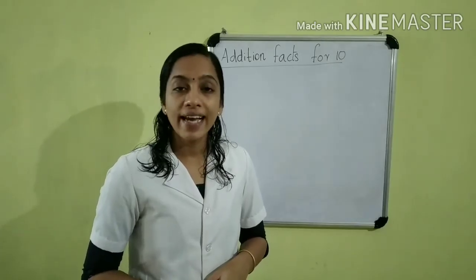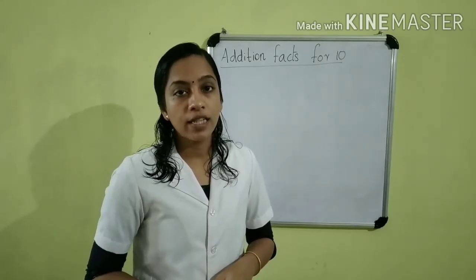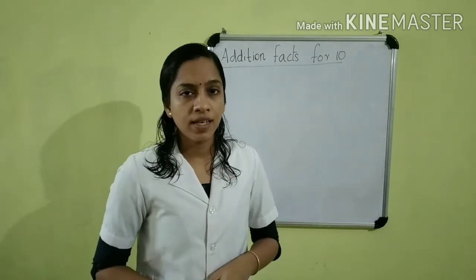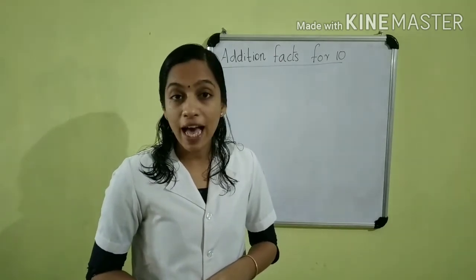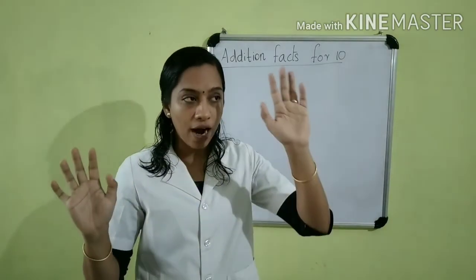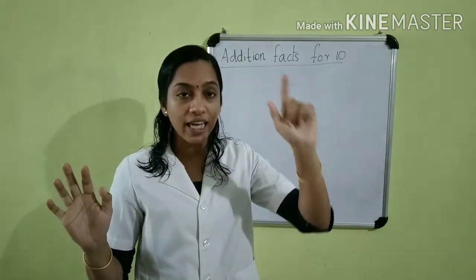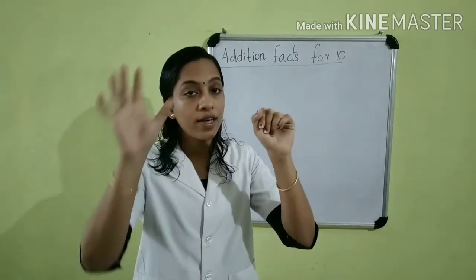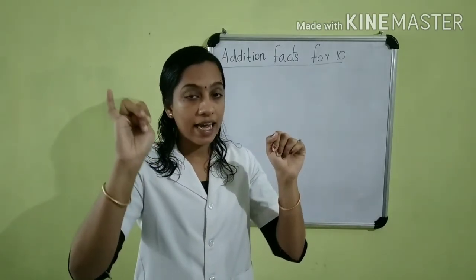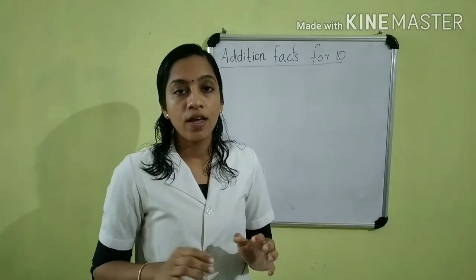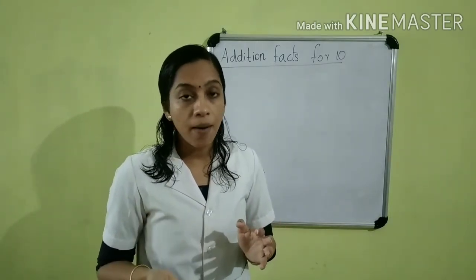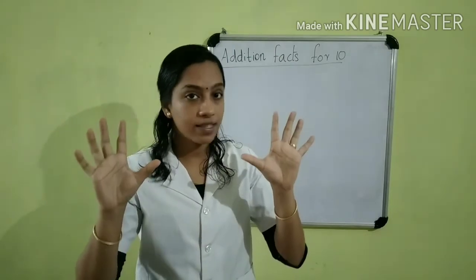Children, next we are going to learn the addition facts for 10. How many fingers do you have? We have 10 fingers: 1, 2, 3, 4, 5, 6, 7, 8, 9, 10. We are going to find the addition sums for 10 by using our fingers.